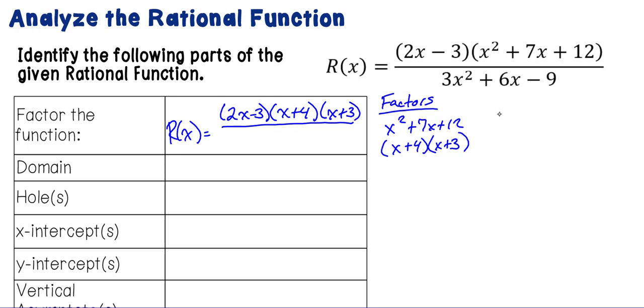For the bottom, we have 3x squared plus 6x minus 9. First thing I would look here is I've got a common number in all of the terms. So I would factor out 3 and I would be left with x squared plus 2x minus 3. And then factor that out and I'm left with x with 3 and 1. The middle number is positive, so that means 3 needs to be positive. So my factors on the bottom would be 3 times x plus 3 times x minus 1.